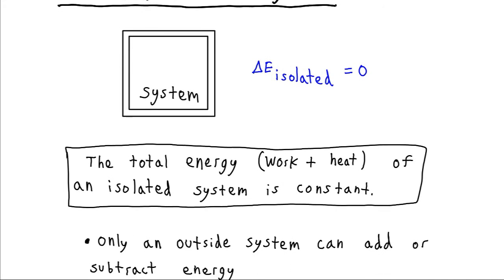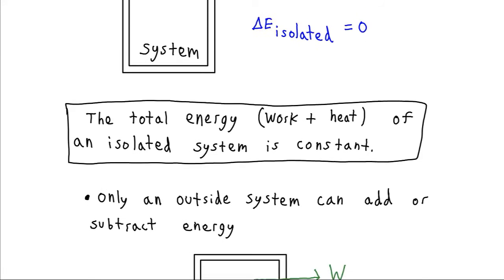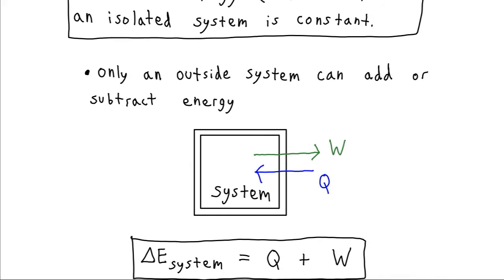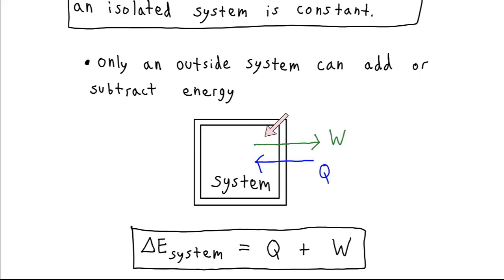Only an outside system could possibly add or subtract energy. If we relax our stipulation about the impermeable barrier, and say that work can be done on the system from the outside or the system can do work on the outside, and heat can be dumped into the system or extracted from the system, then the change in energy of the system is going to be precisely equal to however much heat energy we add or subtract plus however much work energy we add or subtract from outside the system. This is another way of stating the first law of thermodynamics in mathematical form.